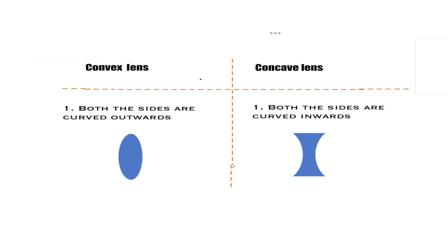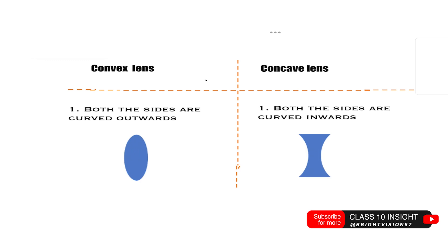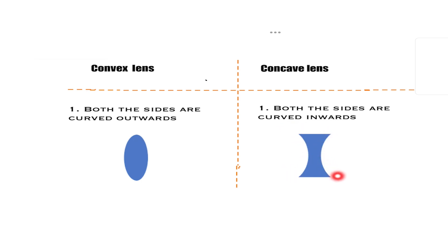Welcome to Class 10 Insight. In today's class, we shall be discussing the differences between convex lens and concave lens. This is the figure which we have to remember to differentiate between these two types of lenses. Convex lens, in general, we also call them as biconvex since both the surfaces are curved outwards. Concave lens can also be called as biconcave lens as both the surfaces are curved inwards.